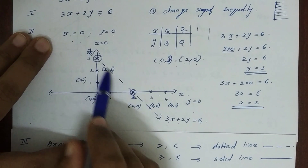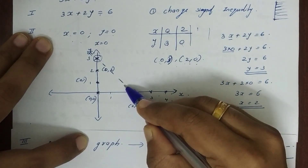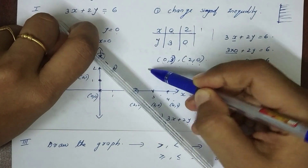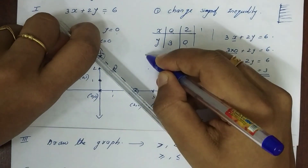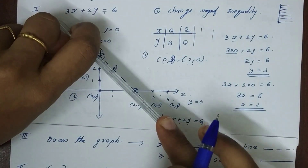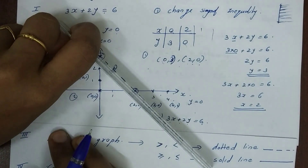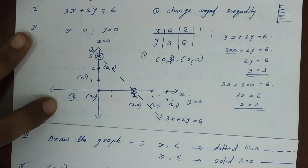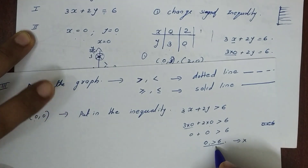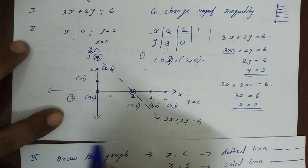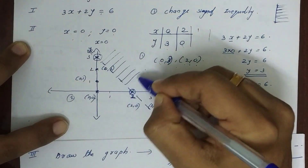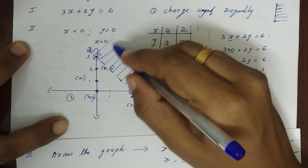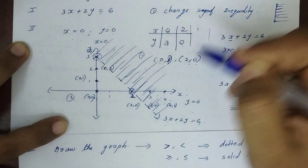The line 3x plus 2y equal to 6 divides the plane into two regions: Region 1 and Region 2. Since (0, 0) gives a false result, it lies in the wrong region. The solution to the inequality is the region on the opposite side of the line from (0, 0).